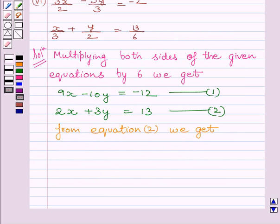From equation 2 we get the value of x equal to 13 minus 3y upon 2. Let us name this equation as 3.